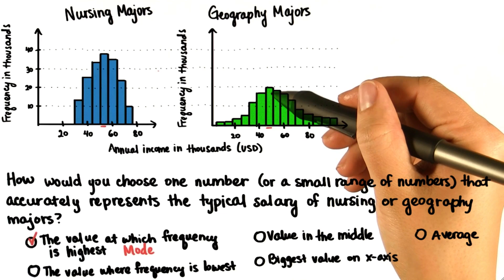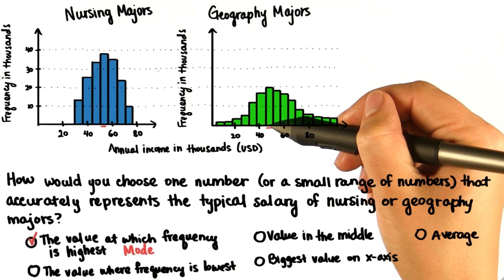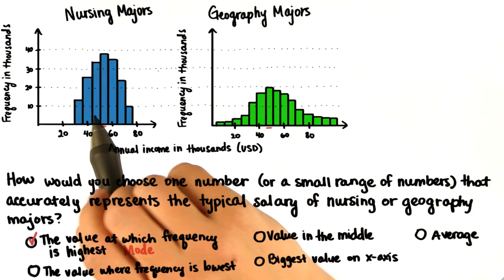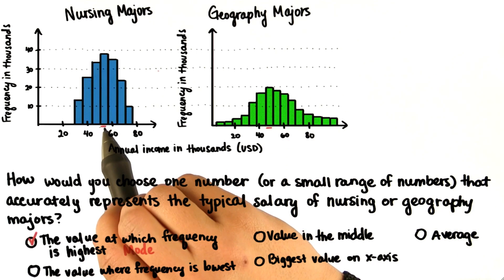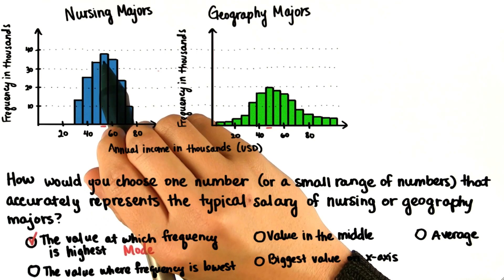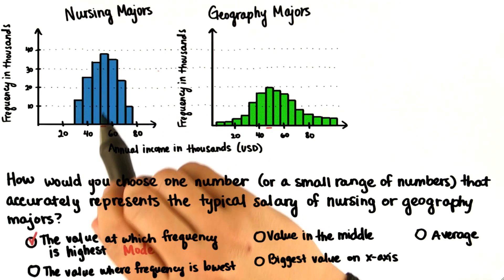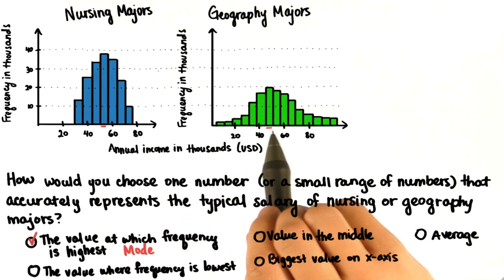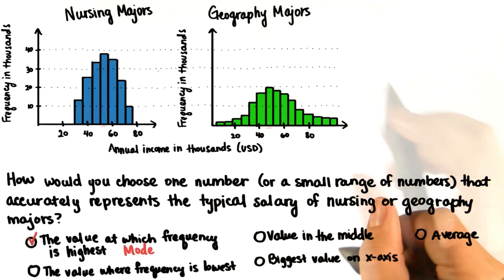In this case, we can't see individual values, but we can see that most of the values rest within this bin. So the mode occurs here and here.